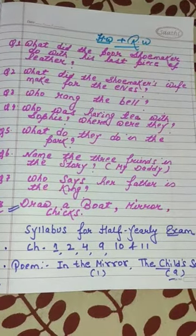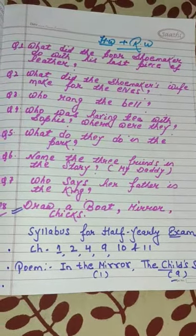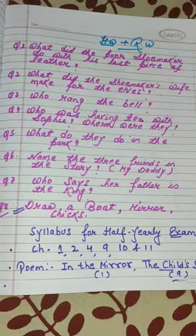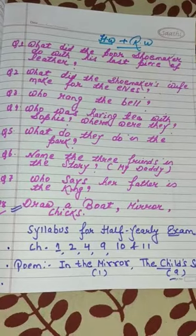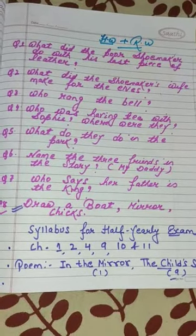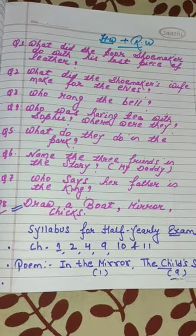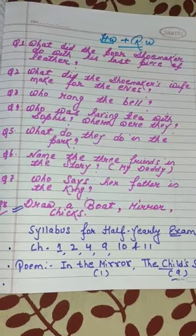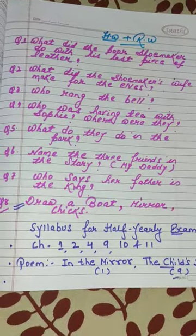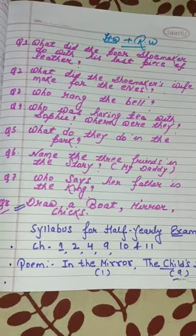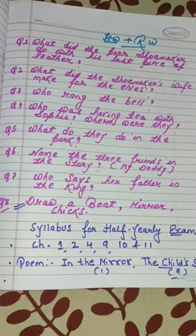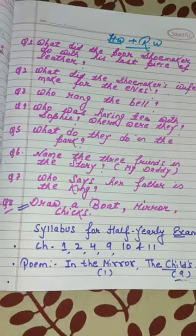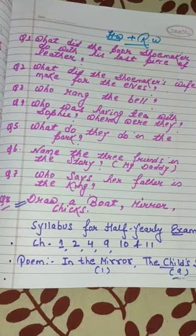Question number 4: Who was having tea with Sophie? Where were they? Question number 5: What do they do in the park?